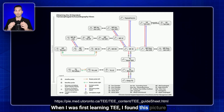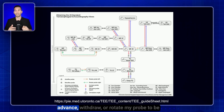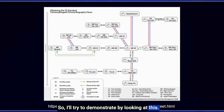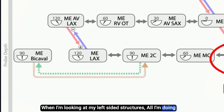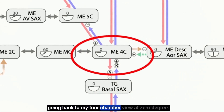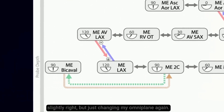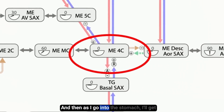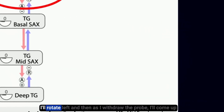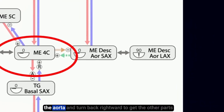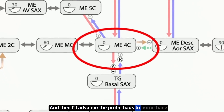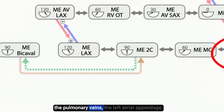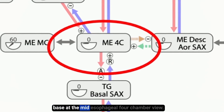When I was first learning TEE, I found this picture to be very helpful in assessing how to advance, withdraw, or rotate my probe to get views and have a very efficient exam. Your midesophageal four-chamber is the home base for the entire exam. When looking at left-sided structures, all I'm doing is changing my omniplane throughout the exam, going back to my four-chamber view at 0 degrees. For right-sided structures, I'm rotated slightly right but just changing my omniplane again. Then as I go into the stomach, I get my different stomach views. I rotate left and as I withdraw the probe, I come up the aorta and turn back rightward to get the arch and ascending aorta. Then I advance the probe back to home base for the special findings — the septum, pulmonary veins, and left atrial appendage — finishing back at the midesophageal four-chamber view.